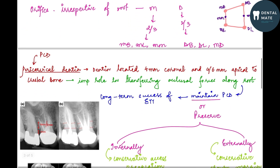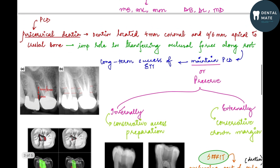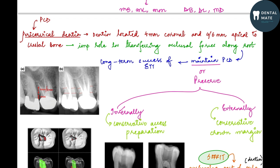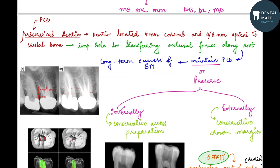There are two terms we need to consider while talking about conservative access cavity preparation: pericervical dentine and soffit. What is pericervical dentine? It is the dentine located 4 mm coronal and 4 to 6 mm apical to the crestal bone. It is important because pericervical dentine plays an important role in transferring the occlusal forces along the root. If we maintain and preserve the pericervical dentine, there is long-term success of endodontically treated teeth.